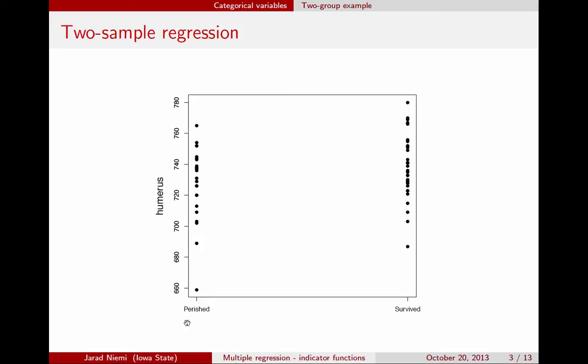If we imagine that perished was zero and survived was one, then we could draw a line, and the line might look like this. That's essentially what we're going to be doing when we construct these dummy variables through the use of indicator functions.